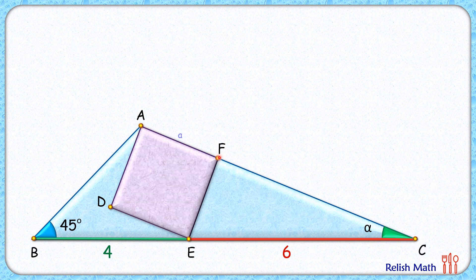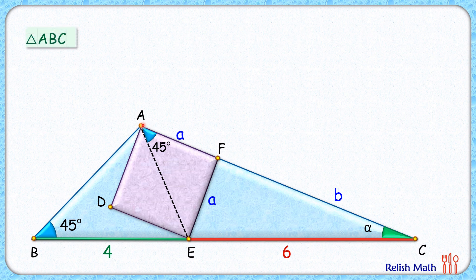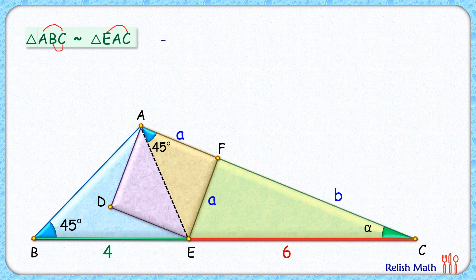For the second approach, let's assume the side length of the square is 'a' centimeters and length FC is 'b' centimeters. We draw the diagonal AE of the square — the diagonal bisects the angle, so this angle is 45 degrees. Now looking at triangle ABC (the bigger triangle) and triangle AEC (the smaller triangle), both have a 45-degree angle and share angle alpha, so by angle-angle similarity these two triangles are similar.